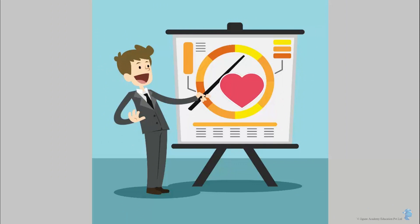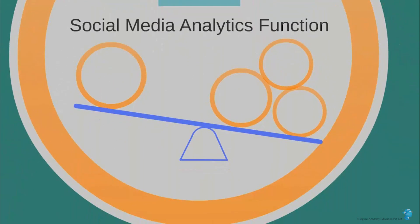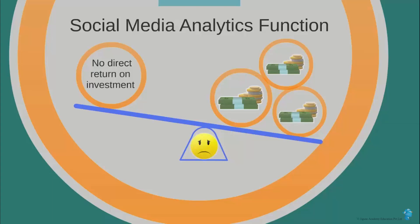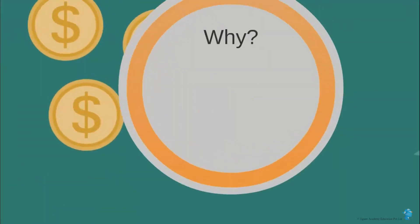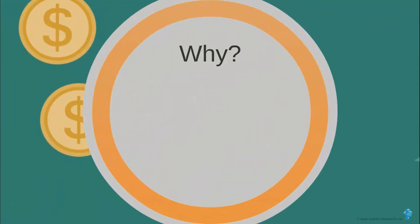Marketers love data because data and its analysis provides proof of which investments worked for them and which did not, and they can use it for decision making about future campaigns. Despite all that's happening in the social media data and analytics space, marketers are actually still not very happy with what they're getting out of their social media investments. One of the reasons is that they are not able to see a direct ROI, partly because social media itself does not necessarily always result in a very specific user action like a purchase.